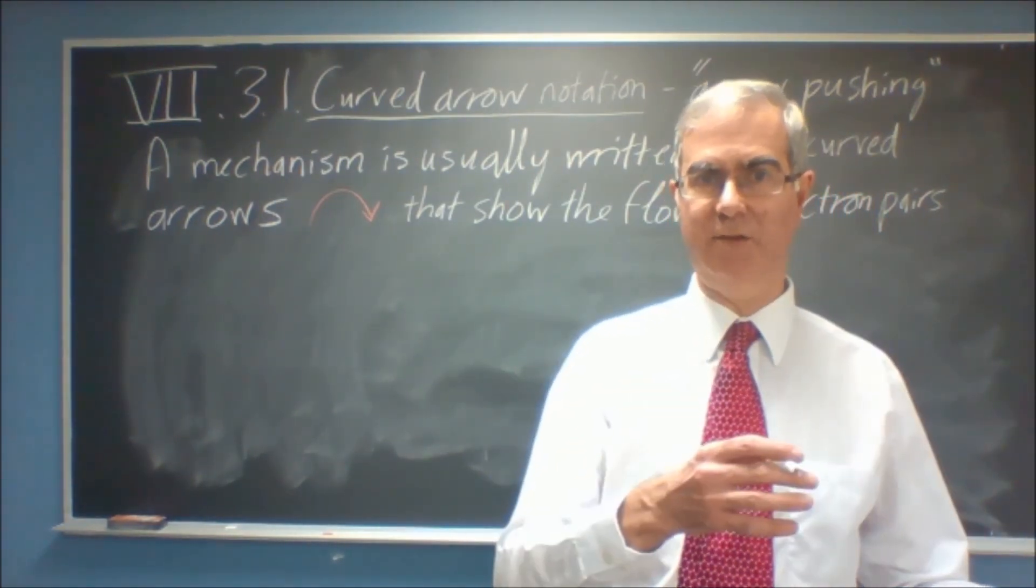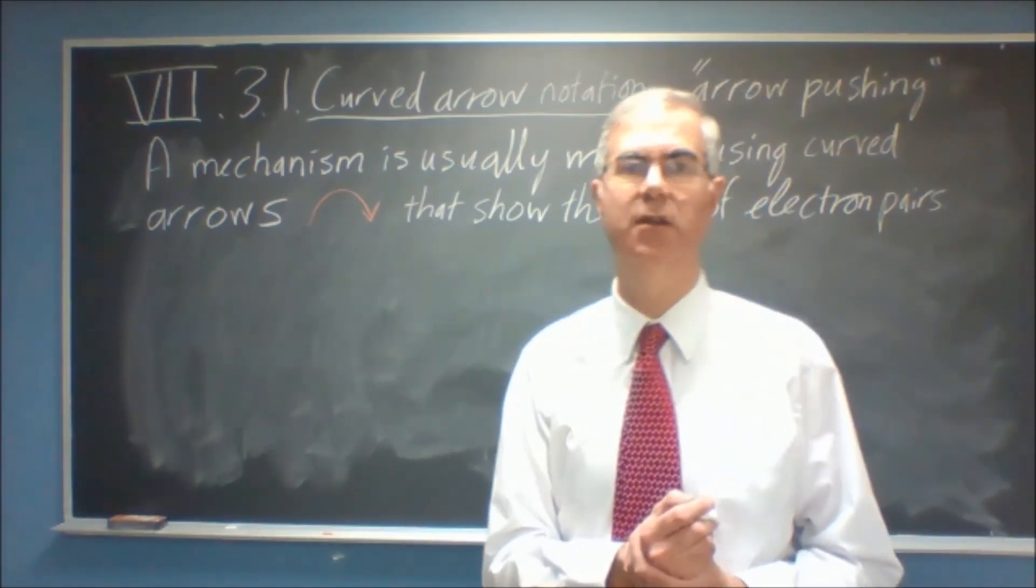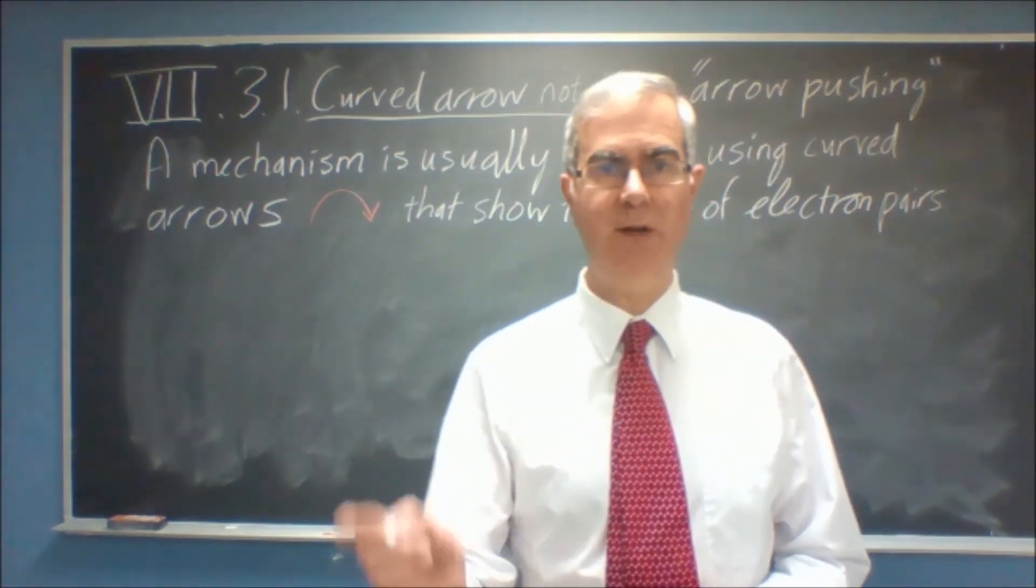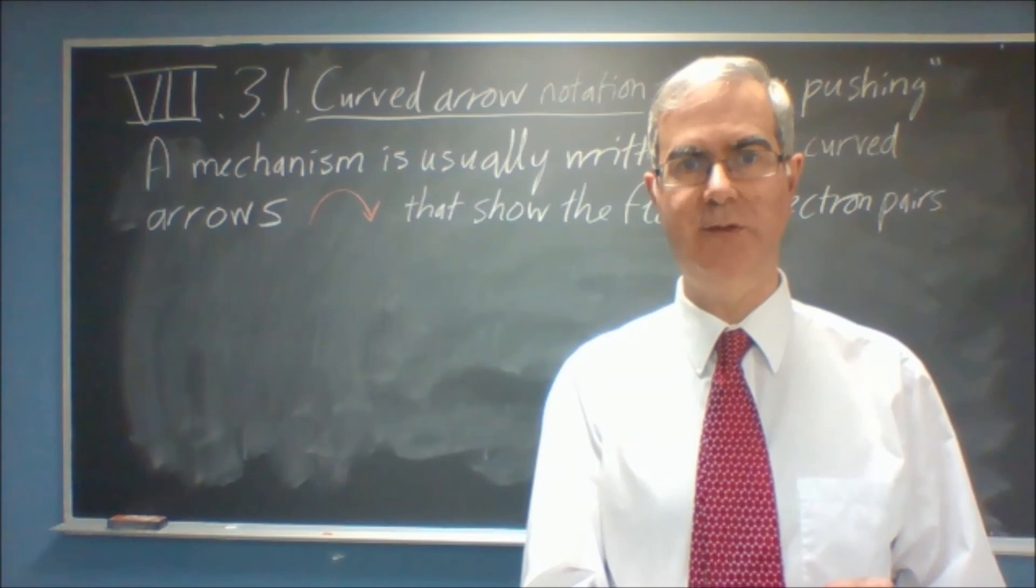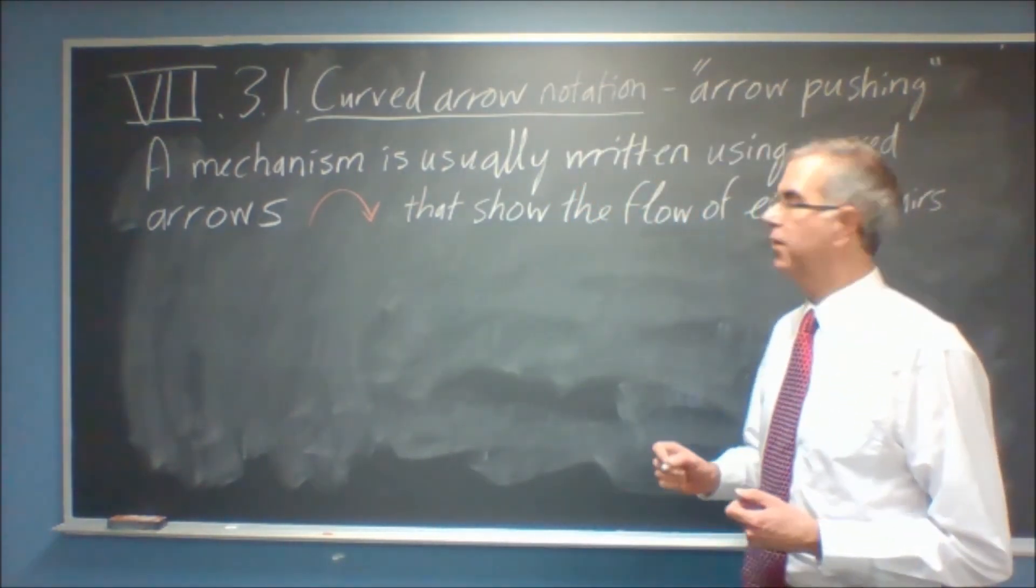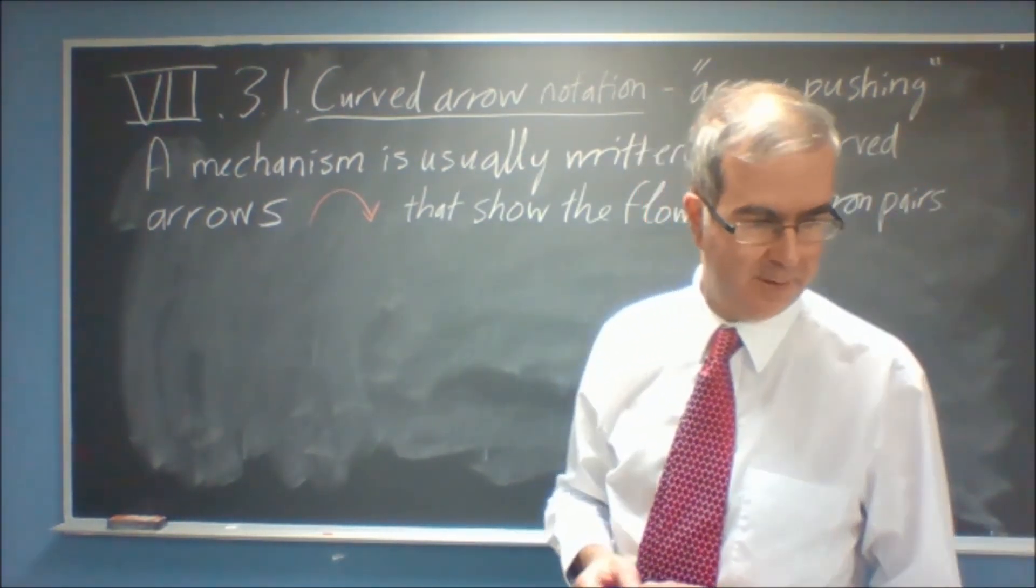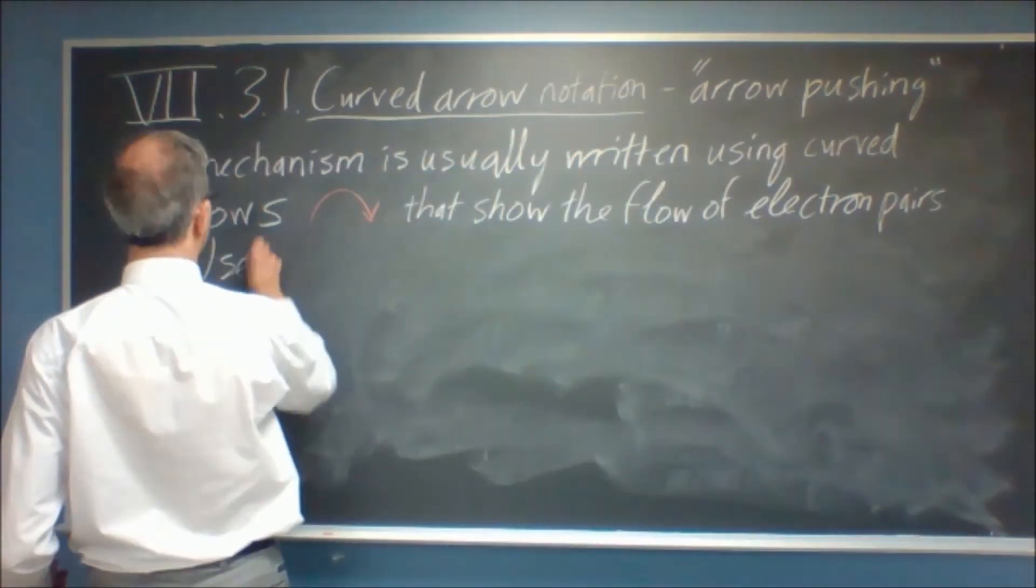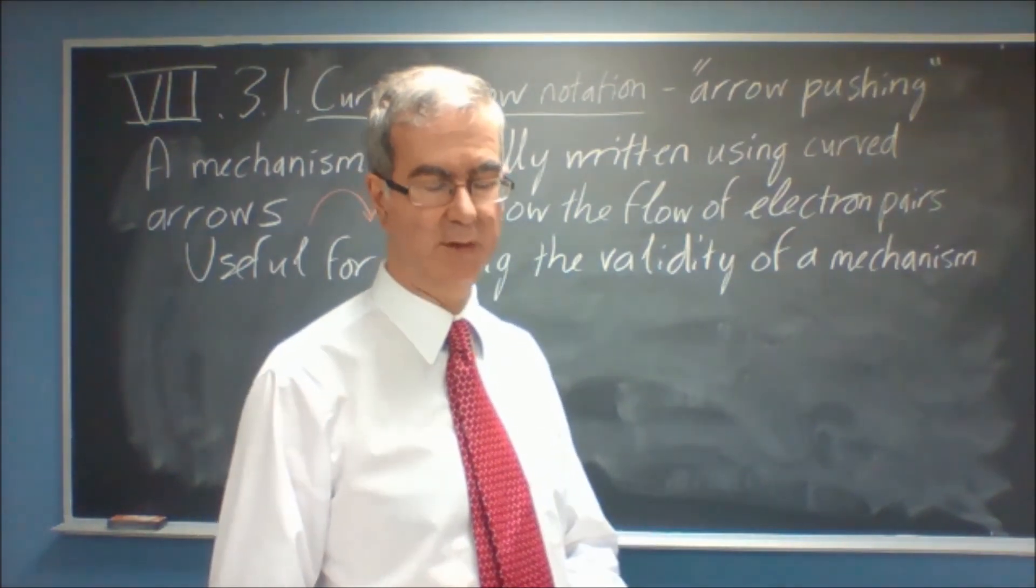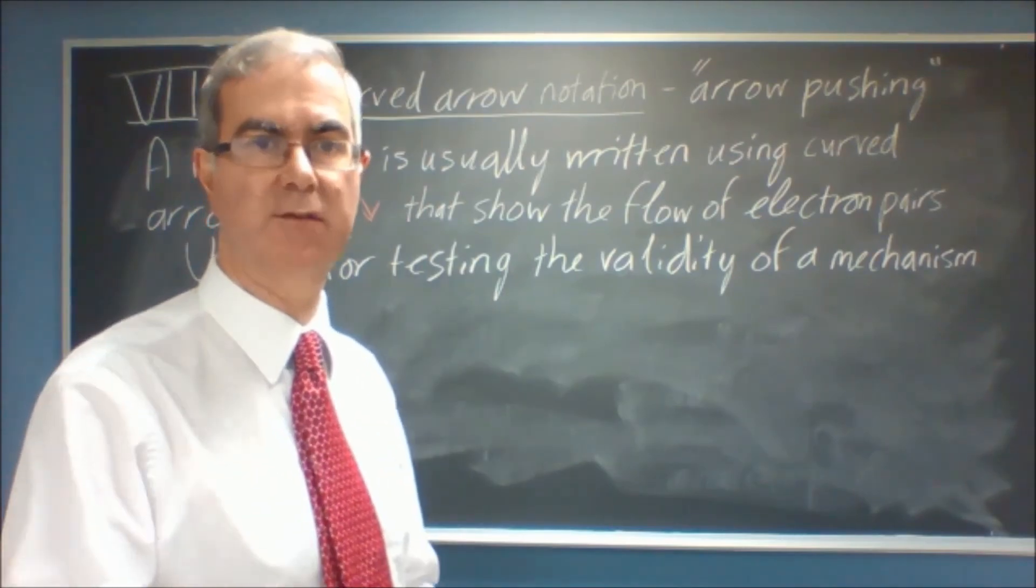It shows these curved arrows, now this is a very powerful way, and you can use it to see if a mechanism makes sense. A mechanism makes sense, because if the arrows are going the wrong way, if you have arrows going towards an electron-rich center, then your mechanism is probably bogus. Or, if you're going to end up with too many electrons or too few electrons, that will become very obvious once you start doing this arrow pushing as it's called, or sometimes pushing electrons.